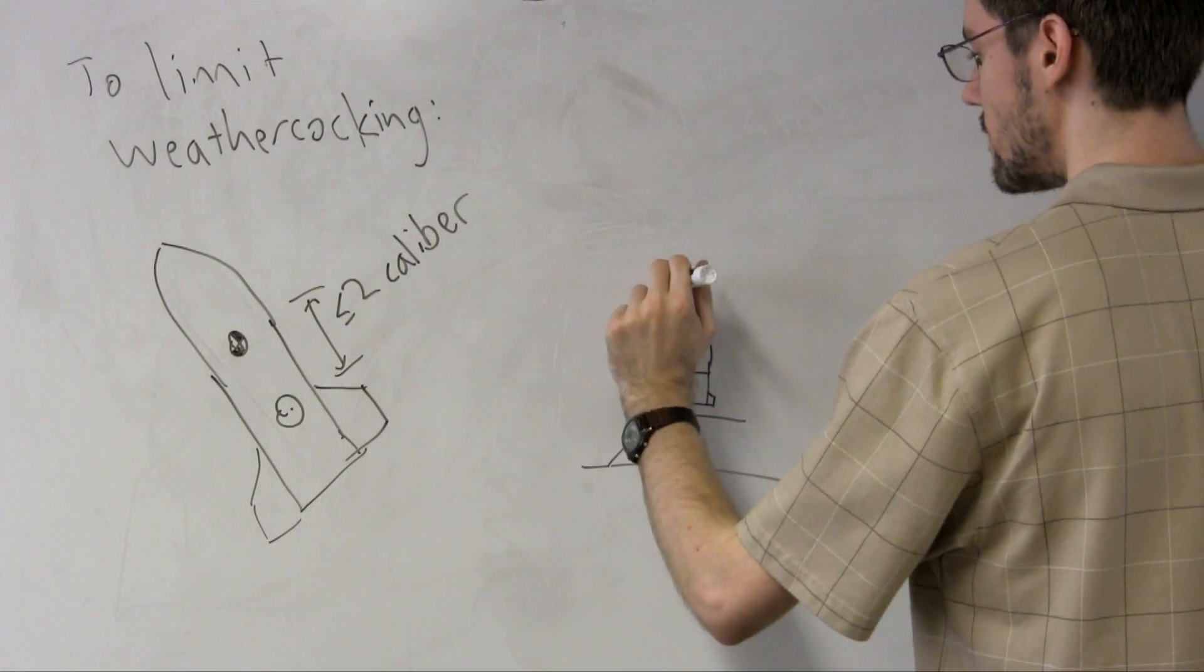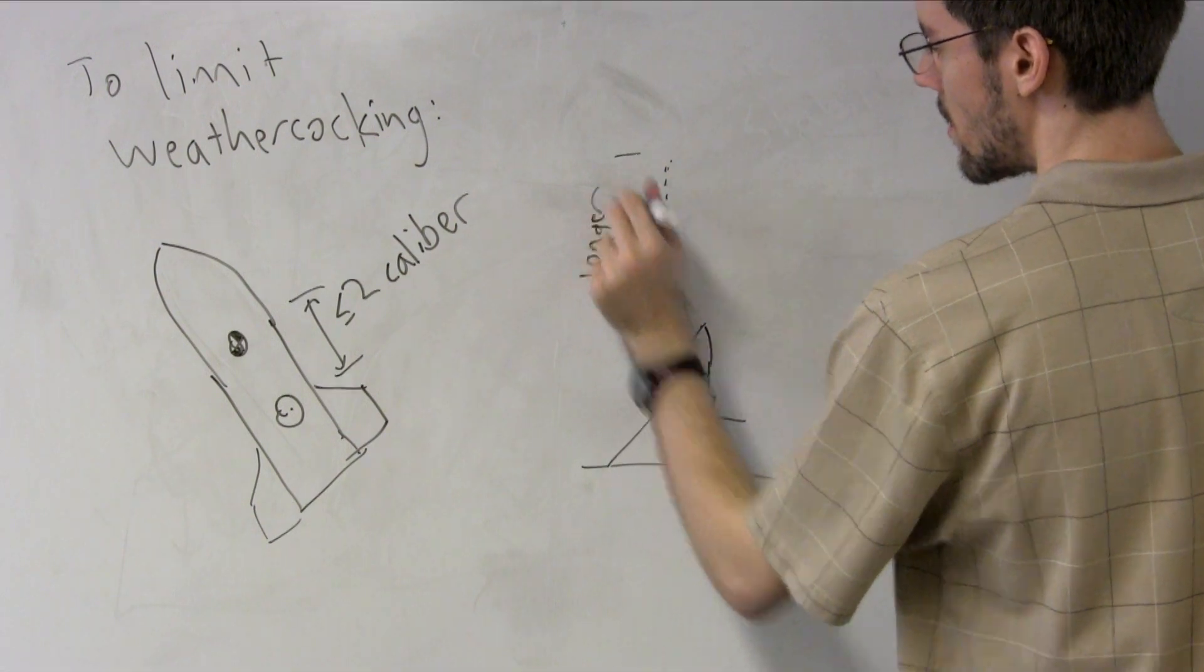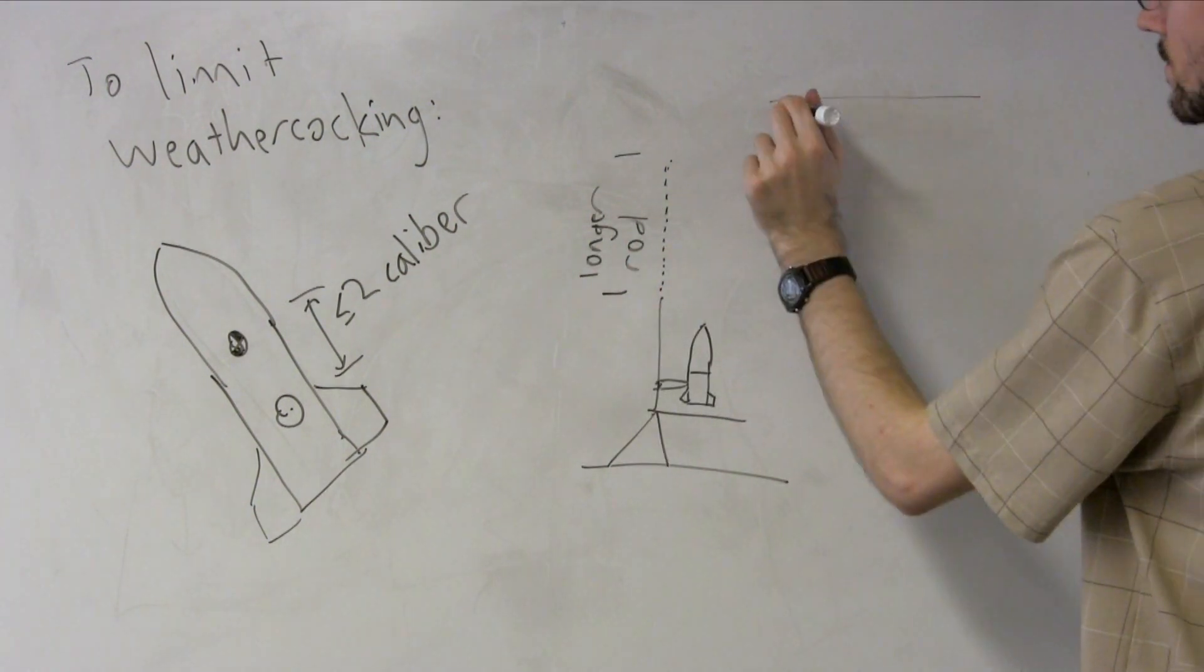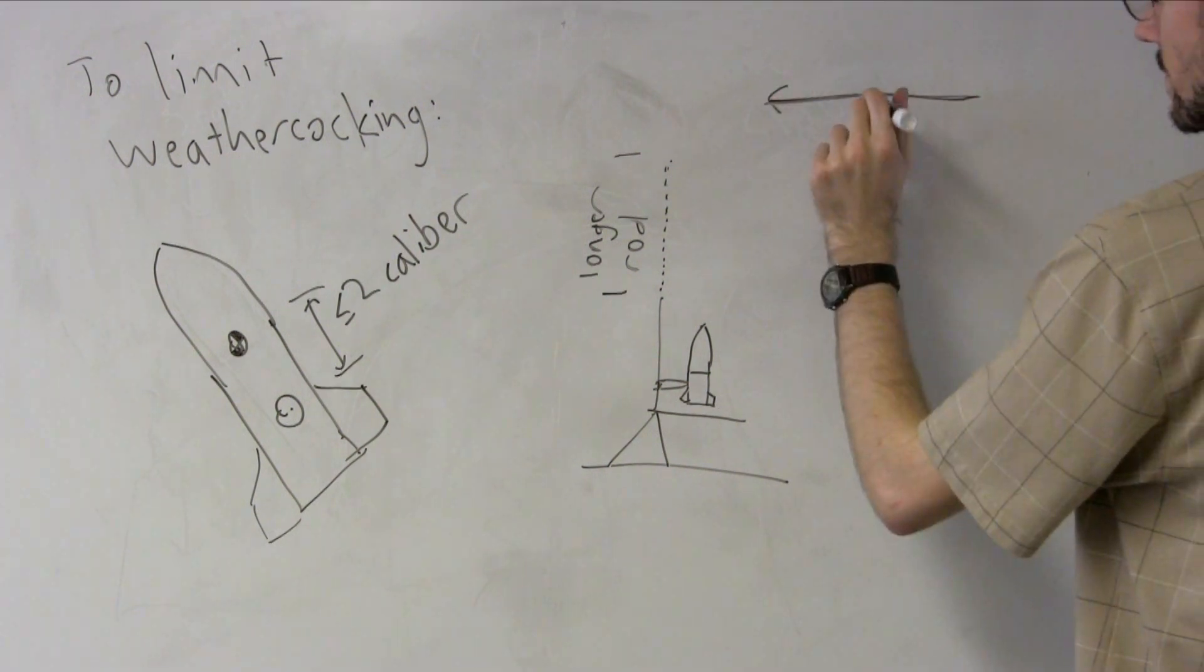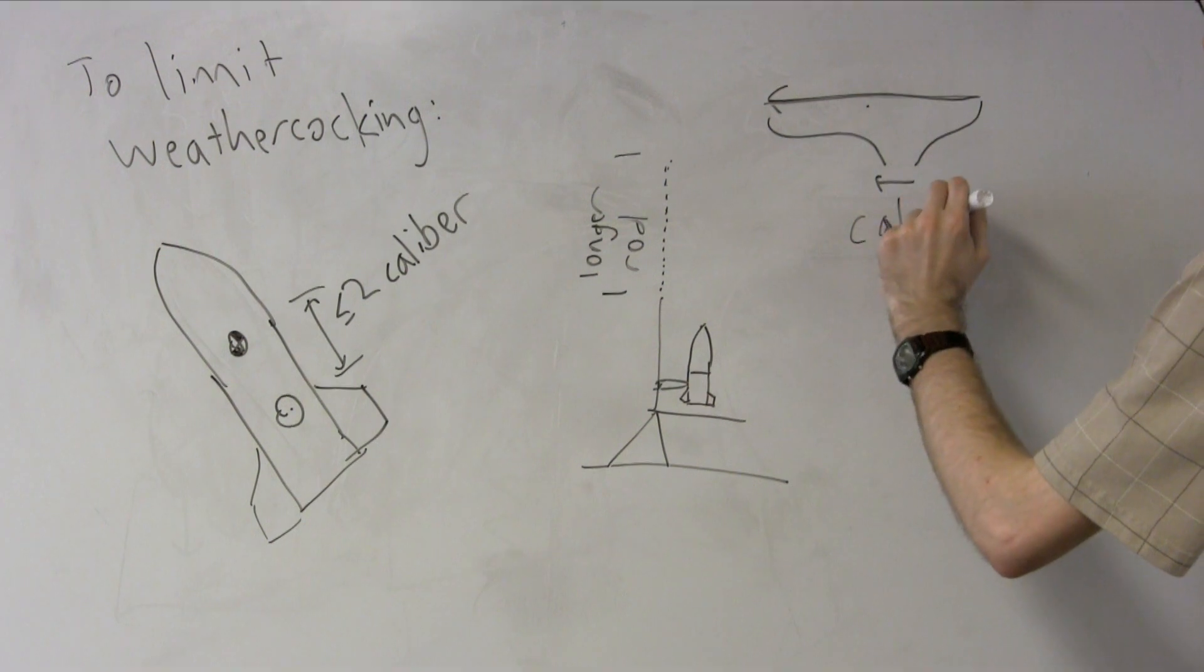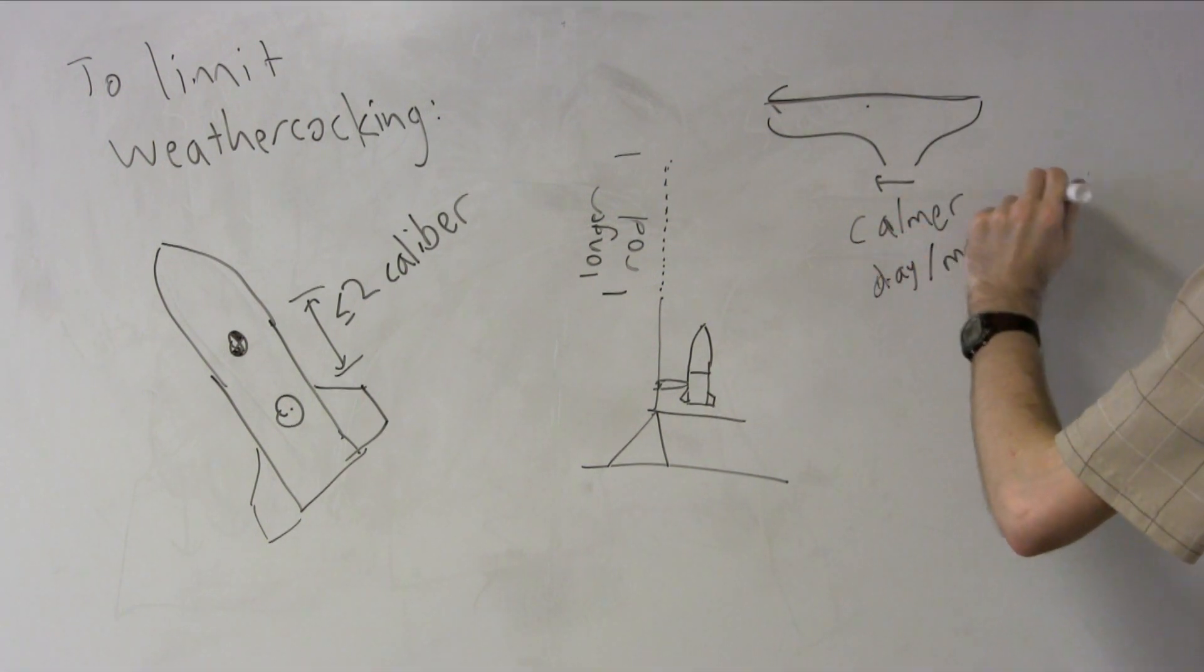In such circumstances, bear in mind that rockets are most likely to weather cock at the moment they leave the launch pad, because they have only had a little time to build up speed. Longer launch rods give rockets more time to accelerate, and motors with more thrust accelerate rockets faster. Both of these techniques help a rocket to be flying faster when it leaves the launch rod, so the wind will affect it less.